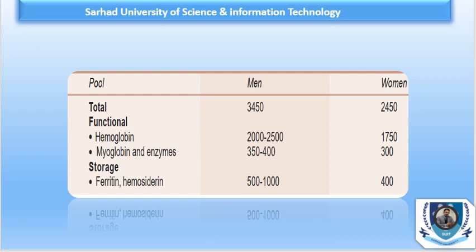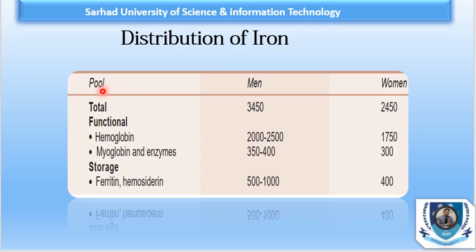Iron is an essential metal present in the human body, and the total body iron content is divided into functional and storage compartments. It is different in men, women, and children. Iron in the body is extensively recycled between the functional and storage pool. These different pools include hemoglobin, myoglobin, ferritin, and hemosiderin. Red blood cells contain hemoglobin, muscles contain myoglobin, and iron is stored in two different forms: ferritin and hemosiderin.